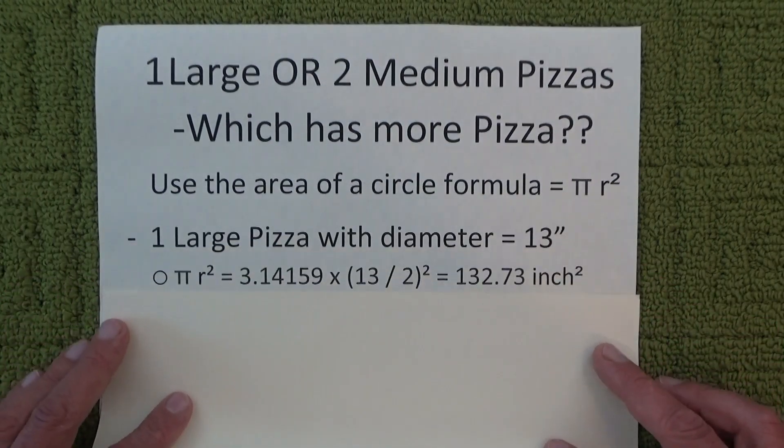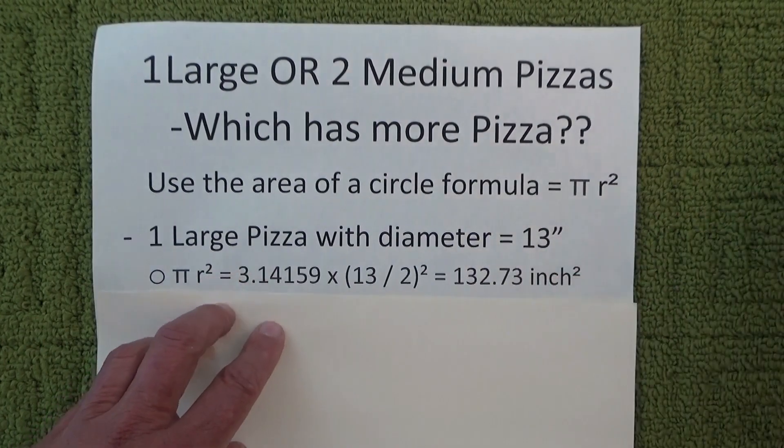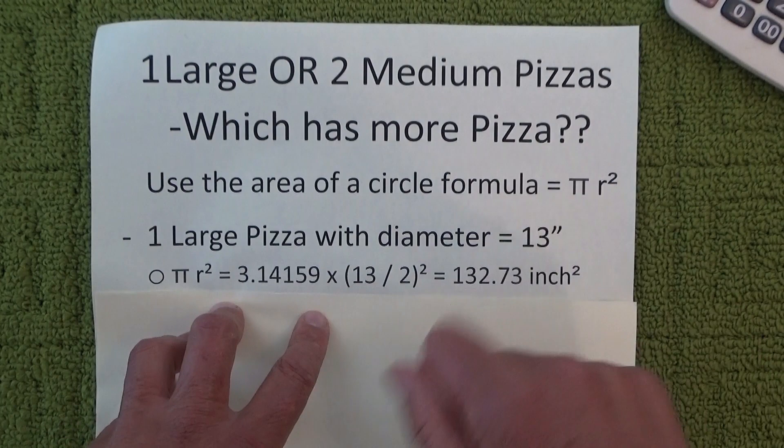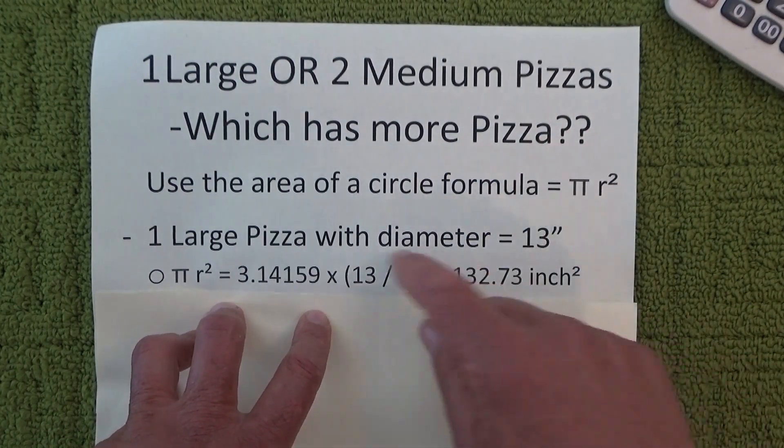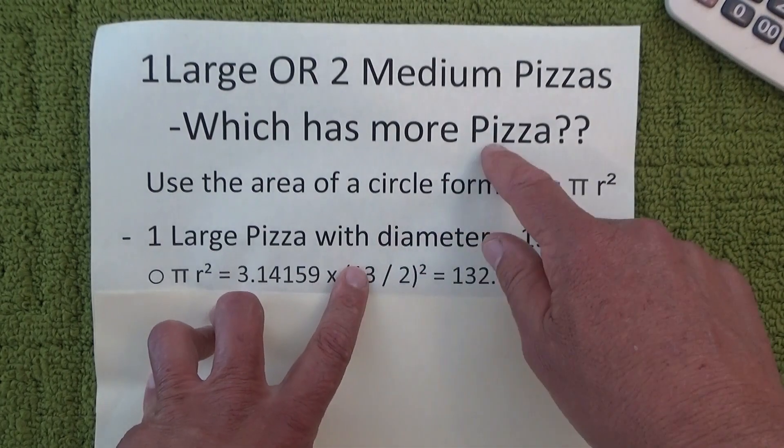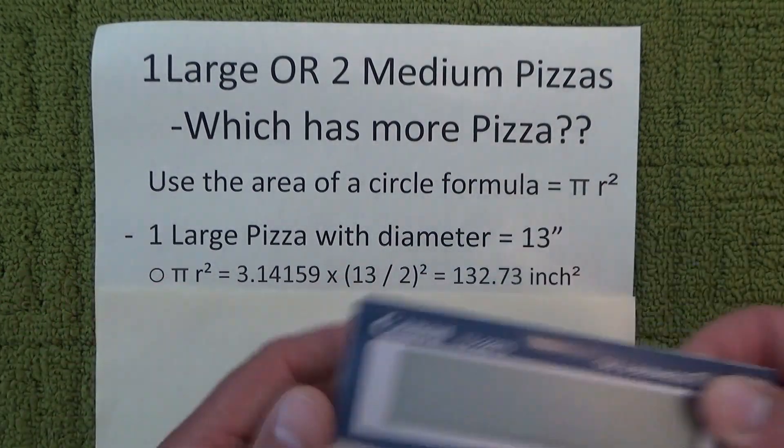Okay, so we know that the large pizza has a diameter of 13 inches, but this formula is actually asking for the radius, and the radius is always half the diameter. So the radius starts in the middle point of the circle and goes out to the edge of the circle or the edge of the pizza.